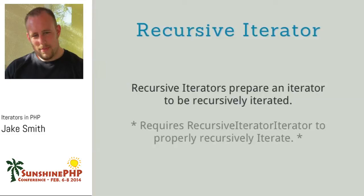Recursive iterator is probably the number one thing that screws people up when they get into iterators. You might think, okay, I'll create a new RecursiveIterator, but RecursiveIterator only sets up your iterator to be recursively iterated. If you actually do a foreach on a RecursiveIterator, it wouldn't recursively iterate — all it does is set up the getChildren and hasChildren methods.